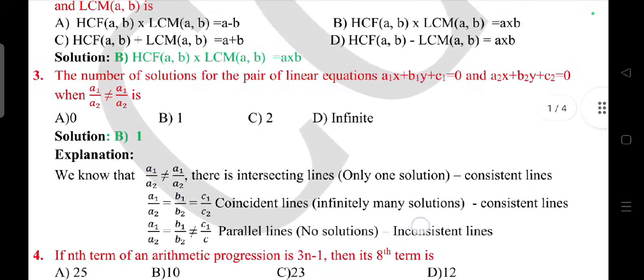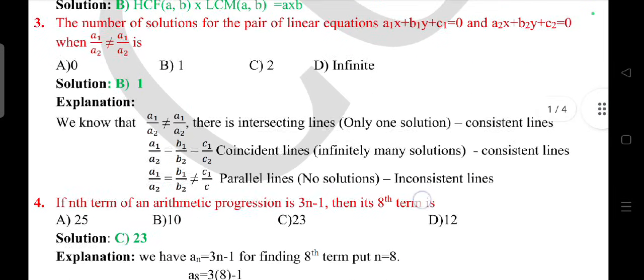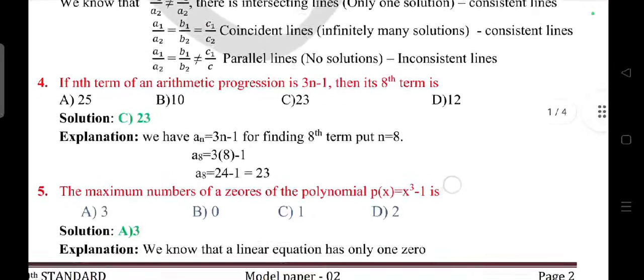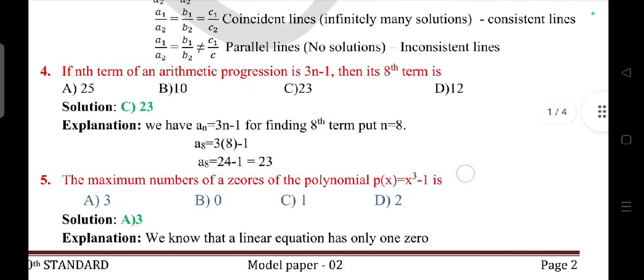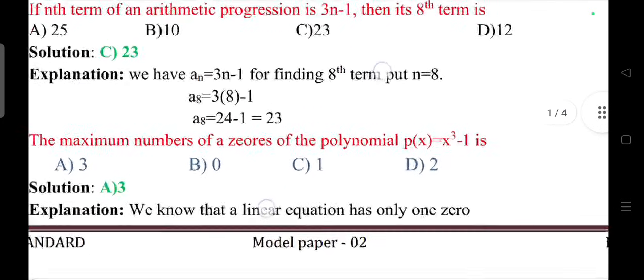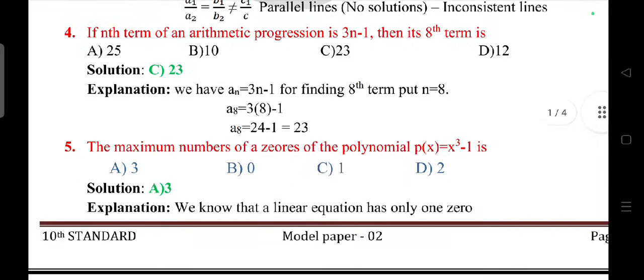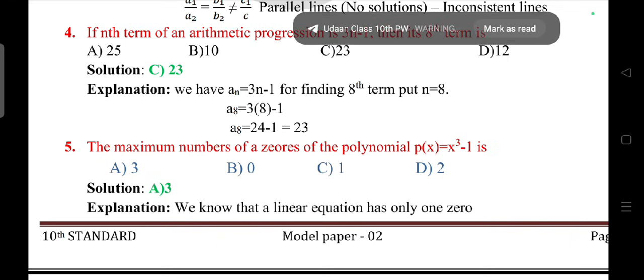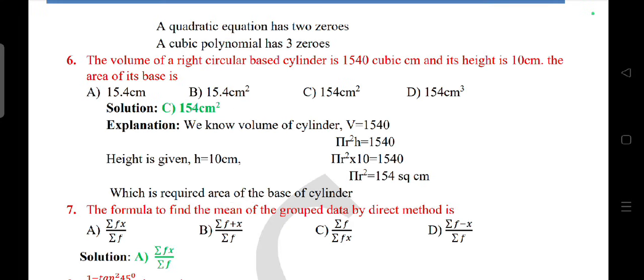If the nth term of arithmetic progression is 3n minus 1, then 8th term is answer 23. The maximum number of zeros of a polynomial x cube minus 1 is answer 3. The volume of right circular base cylinder is 1540 cubic centimeter and its height is 10 centimeter, the area of its base is 154 square centimeter.